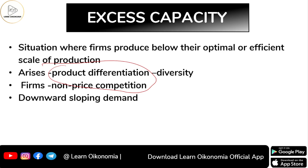In a perfectly competitive market structure, homogeneous commodities are produced, but in monopolistic competition it's all about product differentiation — you get diversity. For example, in the soap industry, different companies produce soaps with varying features: some have more glycerin content, some more oil content, some more chemicals, and some are very natural.